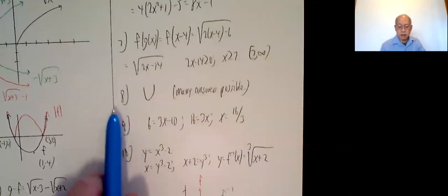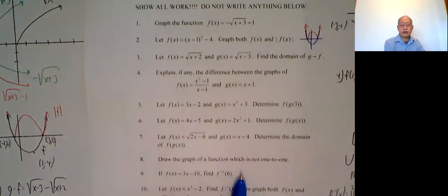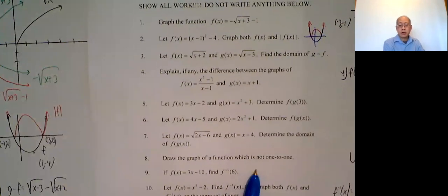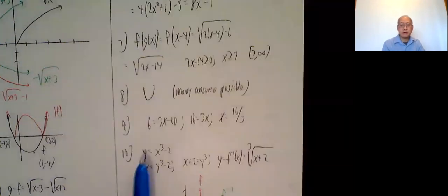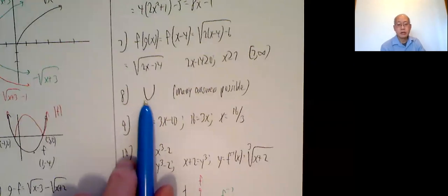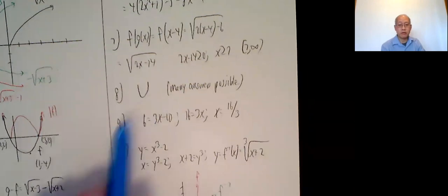Number 8 asks to graph a function which is not 1 to 1. There are infinitely many possibilities. You just need to draw something which passes the vertical line test, but not the horizontal line test. So a parabola would be such an example. So it's a function, but not 1 to 1.